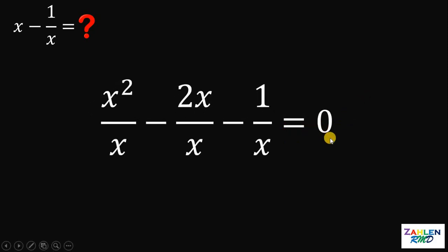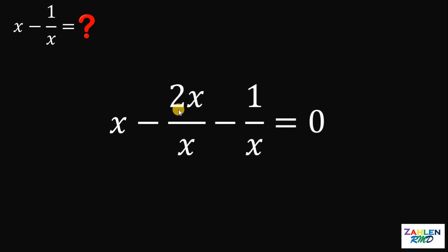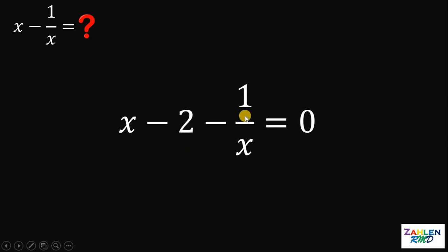Now, 0 divided by x is just 0. And x squared over x is just x. 2x over x is just 2. And we have 1 over x.